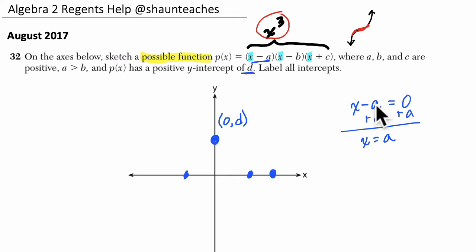So x equals a. Notice when we have x minus a, x ends up equaling a positive amount. So it makes sense that I put a over here on the positive side of the axis.